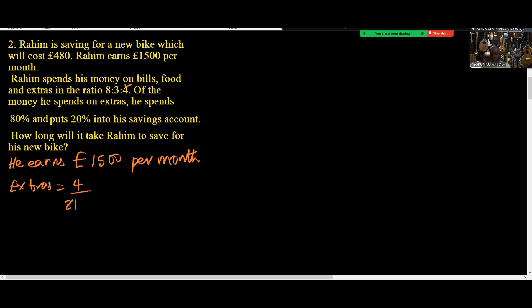So the extras now will be the ratio of extras, which is 4, over 8 plus 3 plus 4, the total ratio. 8 plus 3 is 11, 11 plus 4 is 15. So this is going to be times the total, and the total here is £1500.